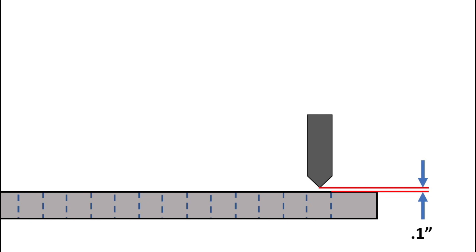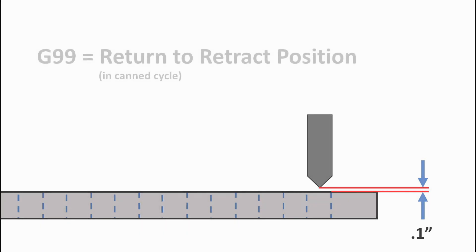It is important to understand that the machine reads several blocks ahead so it can activate and deactivate control commands. Therefore, the G80 is read long before it is used. This allows the G98 to work at the proper time.